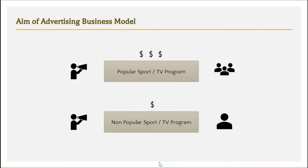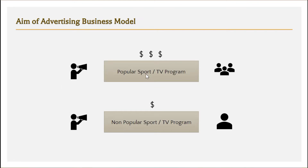What is the aim to make this entire model successful? This advertising model is a very old model — we already see this happening on TV. If there is a popular sport or TV program running, the advertiser will run advertisements during that program so that he can grab the attention of multiple users. Since multiple users are viewing that particular program or sport event, the advertiser wants to reach out to multiple people and will run ads during that time.